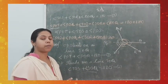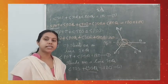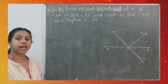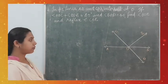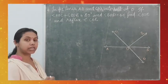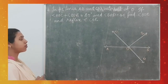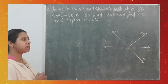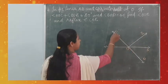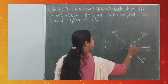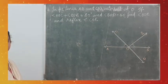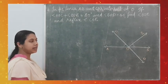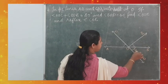Let us do one more problem. In the figure, lines AB and CD intersect at O. It is given that angle AOC + angle BOE = 85° and angle BOD = 40°. Find angle BOE and the reflex angle COE.